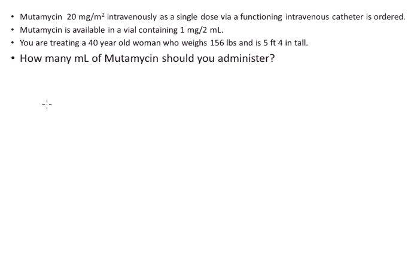Mutamycin 20 milligrams per meter squared intravenously as a single dose via a functioning intravenous catheter is ordered. Mutamycin is available in a vial containing 1 milligram per 2 milliliters. You are treating a 40-year-old woman who weighs 156 pounds